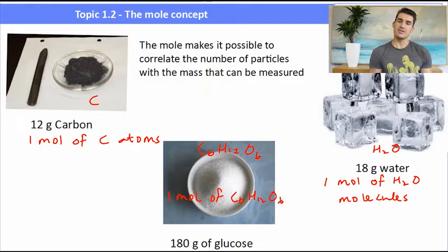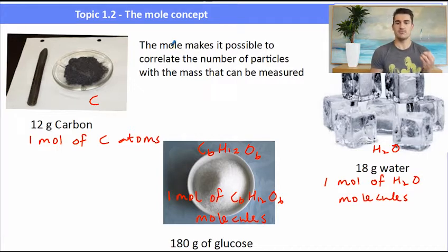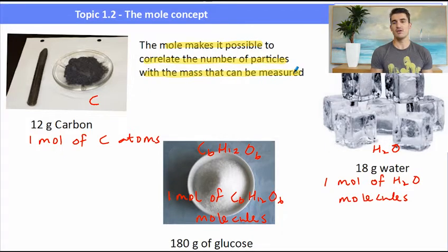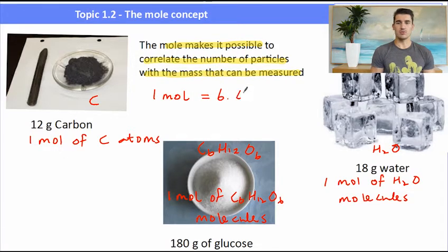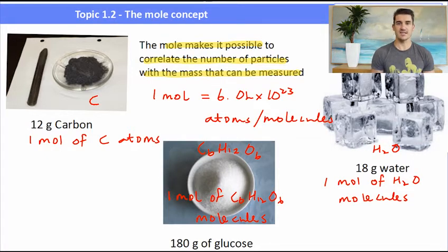The mole gives us a way of working out how many grams of something we need so that we can actually physically measure it out. It allows us to calculate the mass needed for one mole. So one mole is equal to 6.02 times 10 to the 23 particles — atoms, ions, molecules — one mole is 6.02 times 10 to the 23.